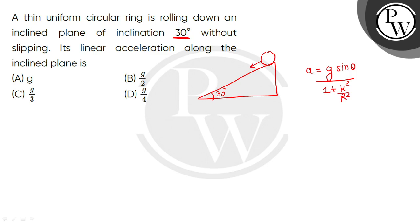This is our ring rolling down. What will the moment of inertia of the ring be? The moment of inertia of the ring would be m r square. This will be m k square. What will the value of k square divided by r square be? One.